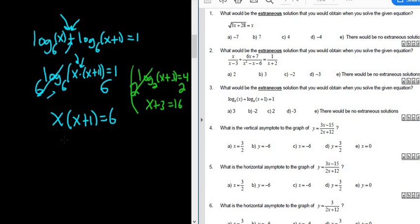So now we'll go ahead and distribute. We have x times x, that gives us x², and then x times 1, that gives us x. And all of that equals 6. It's a quadratic equation, so we'll set it equal to 0. So minus 6, minus 6. These cancel, so we get x² + x - 6, and that equals 0.